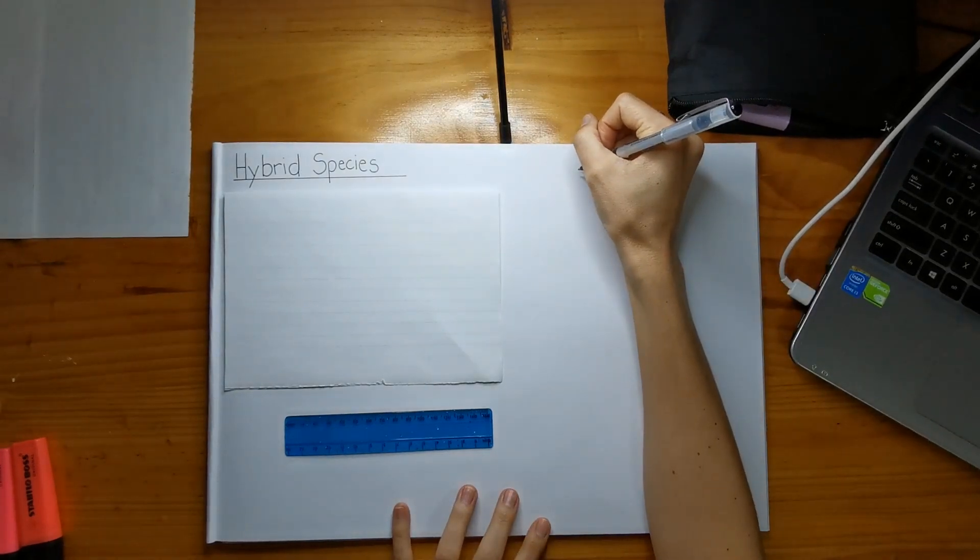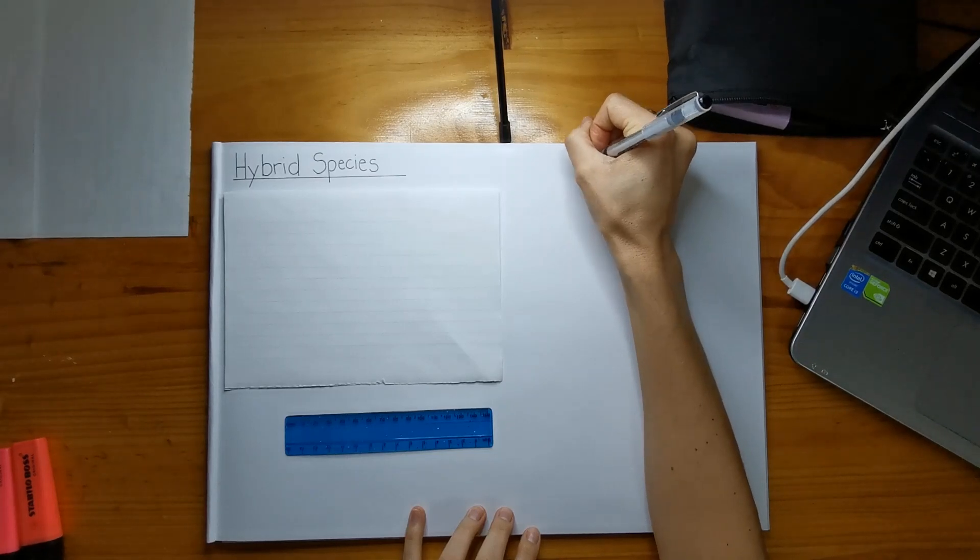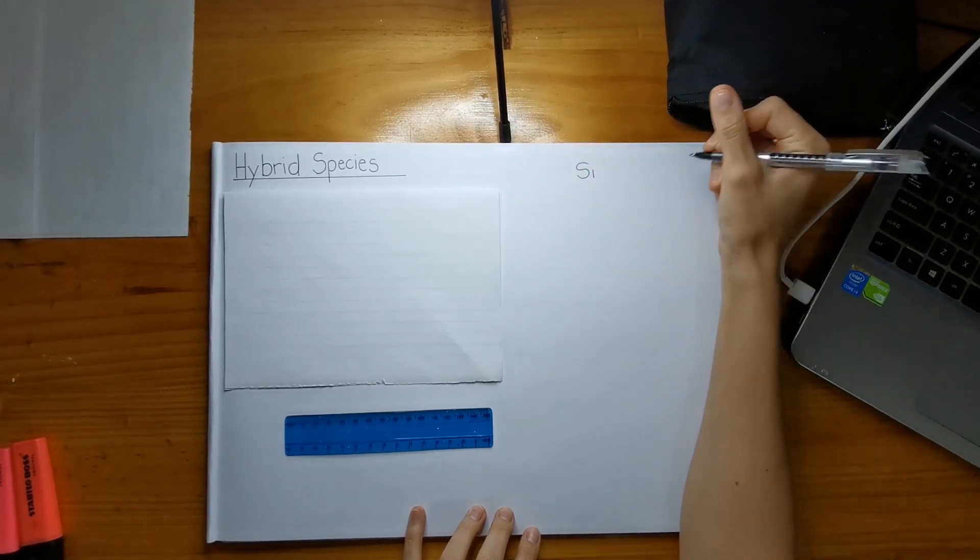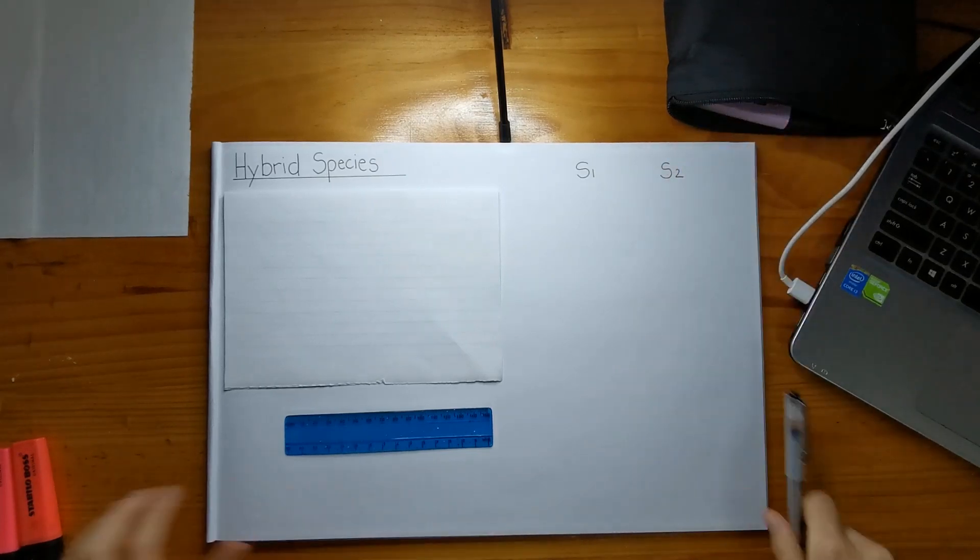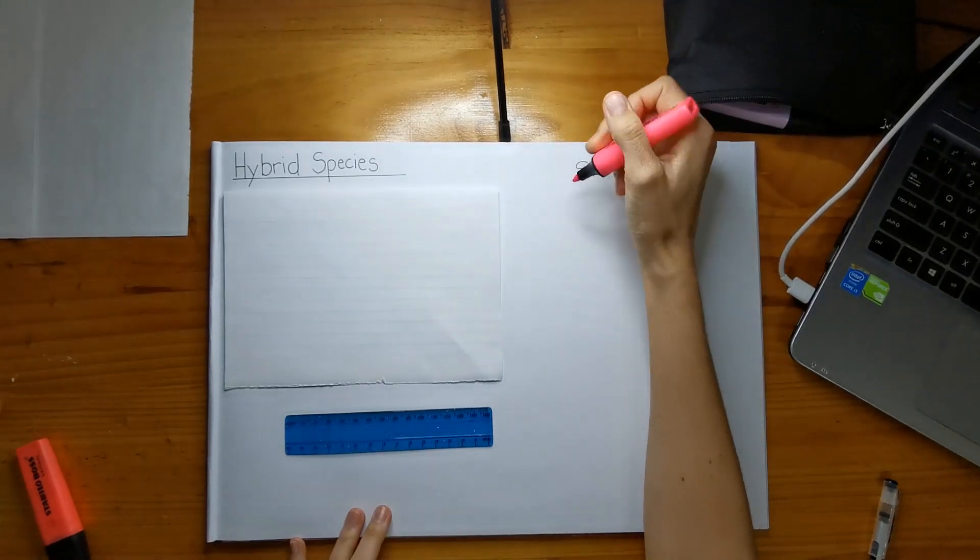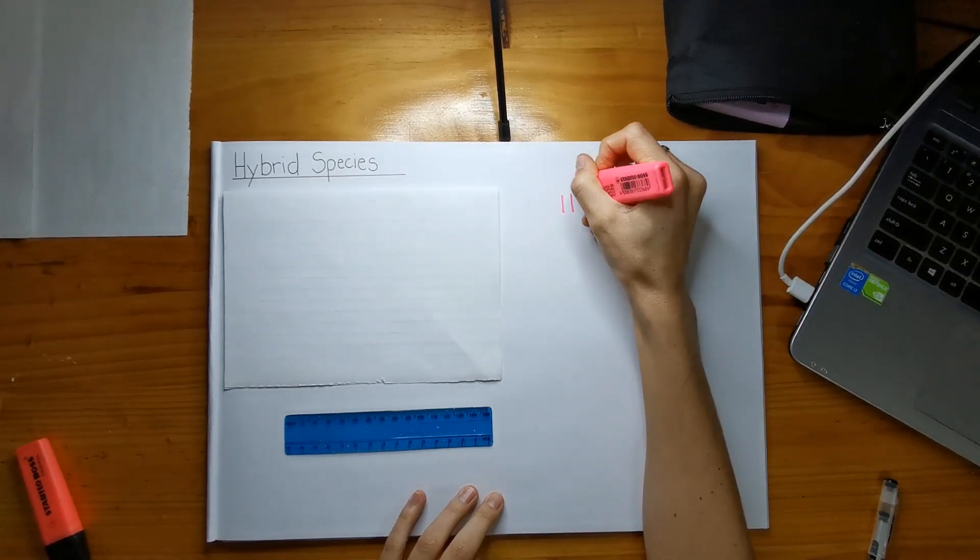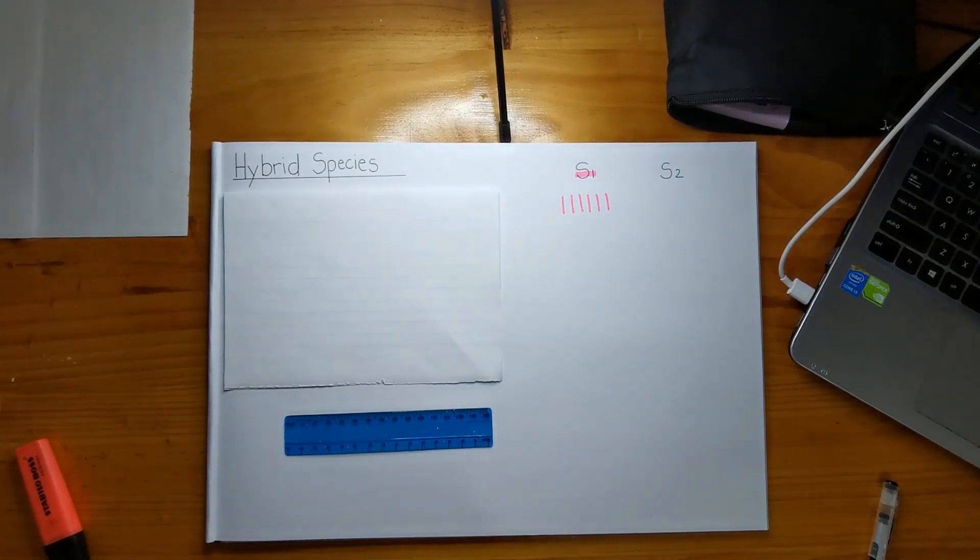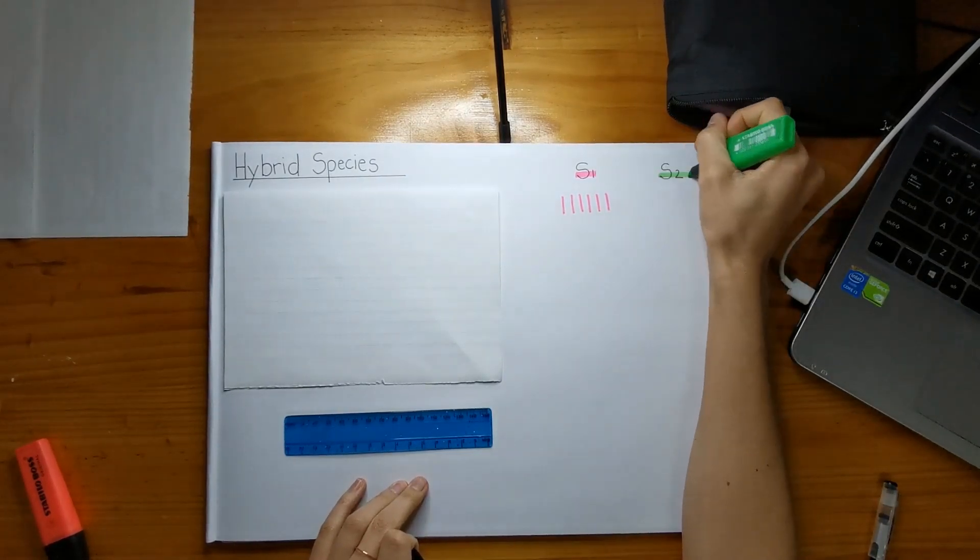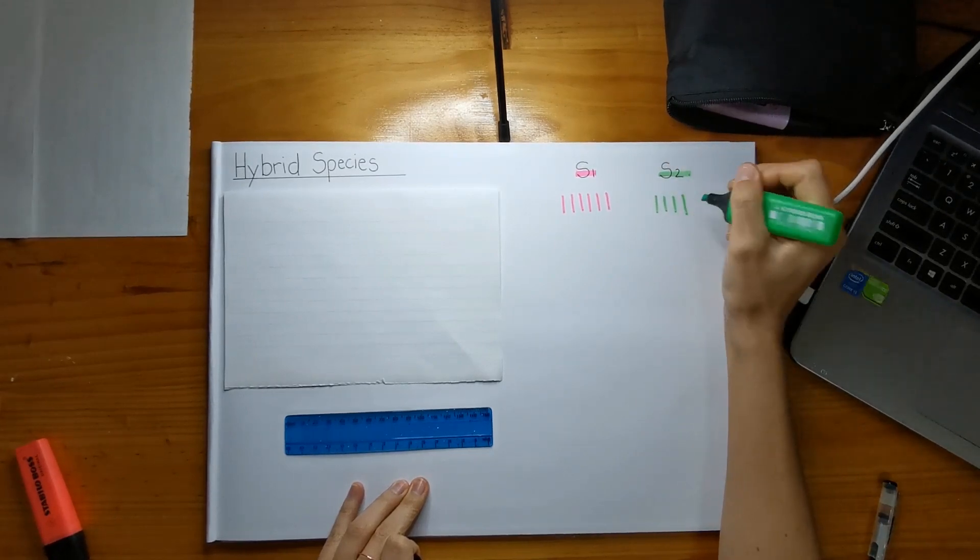Okay, so just to deal with bivalents and everything before we get started. So you usually have one species, and you have another species. All right. And this species is going to be pink, and it's going to have six different chromosomes, like that. And then this species is going to be green, and it's going to have four different chromosomes, right?